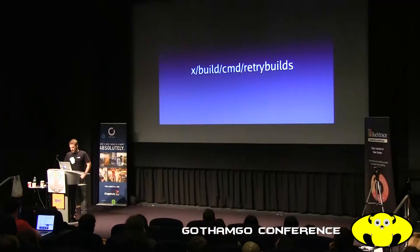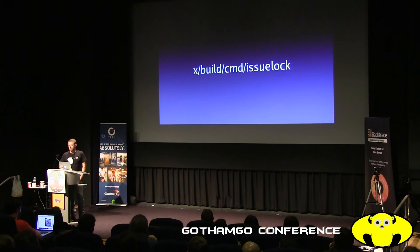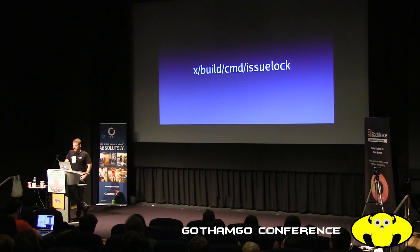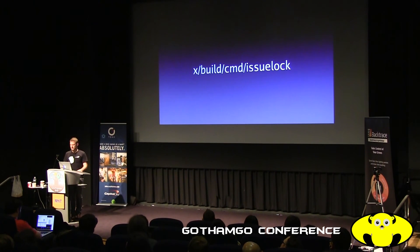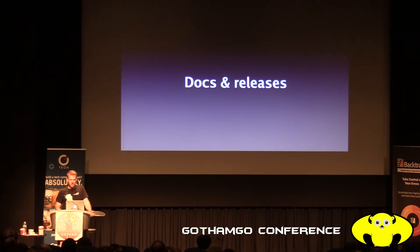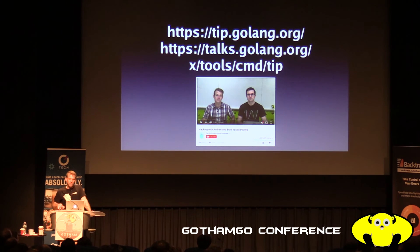We also have a tool called issue-lock, which freezes old GitHub issues. People often find an ancient closed GitHub issue from two years ago via Google and start commenting on it, but nobody replies because it's closed and we're not tracking it anymore. So gopherbot locks the issue and adds a label 'frozen due to age,' so at least they'll file a new bug and we can help them.